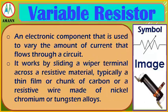Variable resistor is an electronic component that is used to vary the amount of current that flows through a circuit. It works by sliding a wired terminal across a resistive material, typically a thin film or a chunk of carbon, or a resistive wire made of nickel-chromium or tungsten alloys.